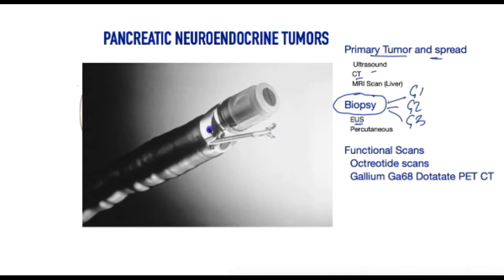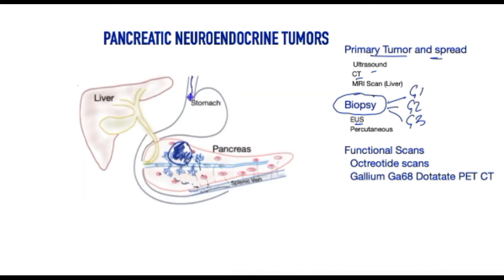The endoscopic ultrasound is a flexible tube with an ultrasound scanner attached at the tip and biopsy forceps just next to it. This is passed down the patient's gullet into the stomach, and it parks itself in the stomach or small bowel to take a direct biopsy of the tumour. If the tumour has spread to the liver, then an ultrasound-guided direct biopsy is sometimes preferable.